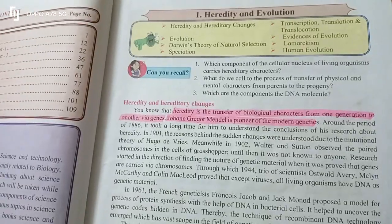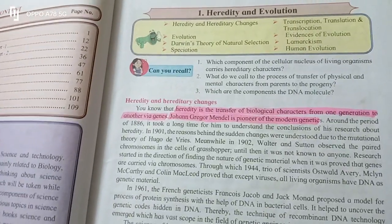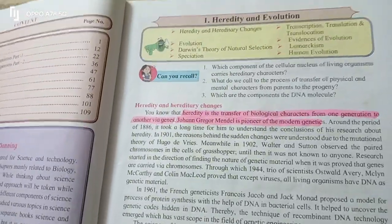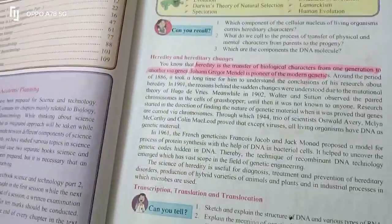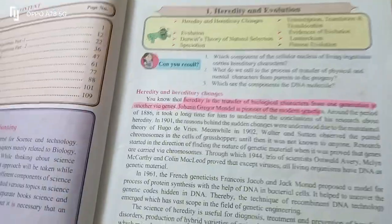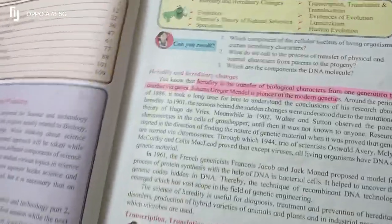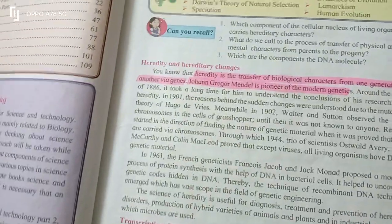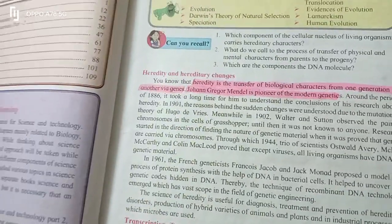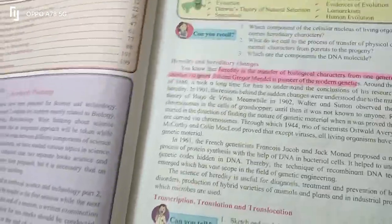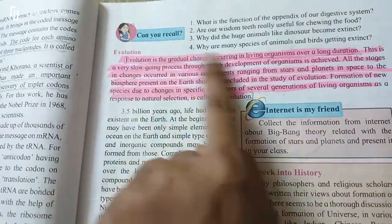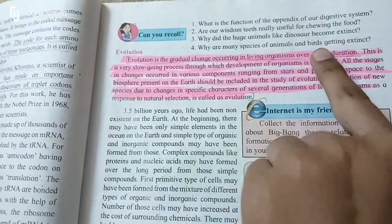John Gregor Mendel is the pioneer of modern genetics. Evolution is the formation of new species due to gradual change occurring in our body after a long time, or due to natural selection. You can find some figures here. Evolution is a gradual change occurring in living organisms over a long duration.